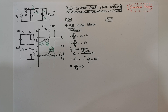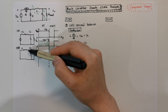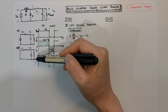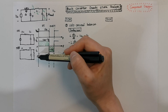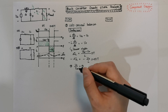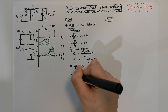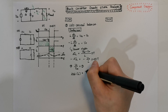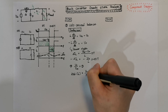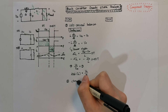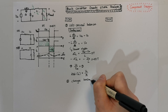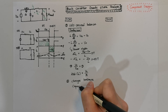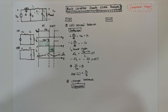The last thing we can calculate from here is the average inductor current. The inductor is always connected to the load no matter whether it's in the on or off state, so the average current is simply equal to V_out divided by R. The second principle we use is capacitor charge balance, which means the average current applied to the capacitor must be zero.